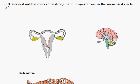IGCSE Biology, syllabus statement 3.10, looking at the role of oestrogen and progesterone in the menstrual cycle.